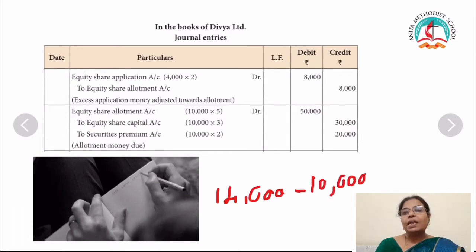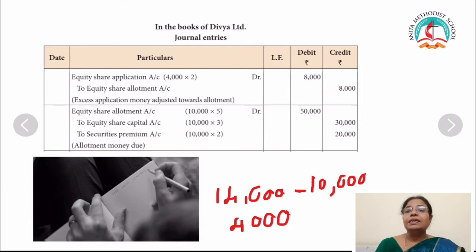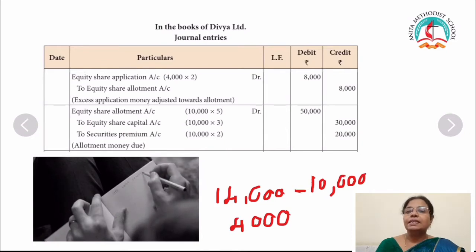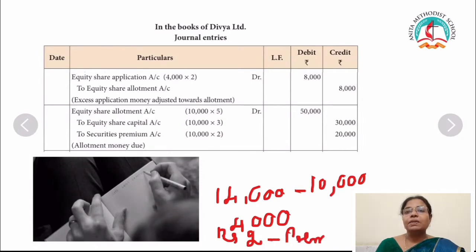The next one is allotment money due. The journal entry is equity share allotment account — 10,000 shares at the rate of rupees 5 — to equity share capital account because premium is included in allotment. The rate of premium is rupees 2. So equity share capital account: 10,000 into 3 = 30,000, and securities premium account: 10,000 into 2 = 20,000. This journal entry is for allotment money due.